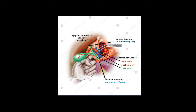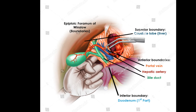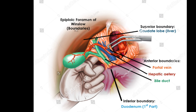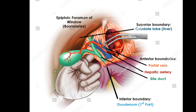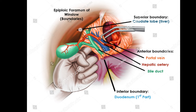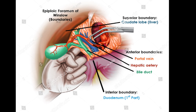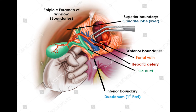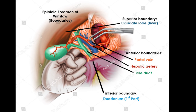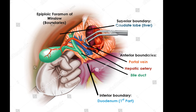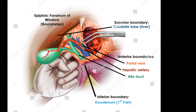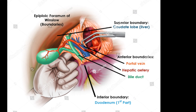This is another image showing the epiploic foramen, or foramen of Winslow. The portal triad forms the anterior boundary, the caudate lobe of the liver forms the superior boundary, and the inferior boundary is formed by the duodenum along with the transverse part of the hepatic artery.